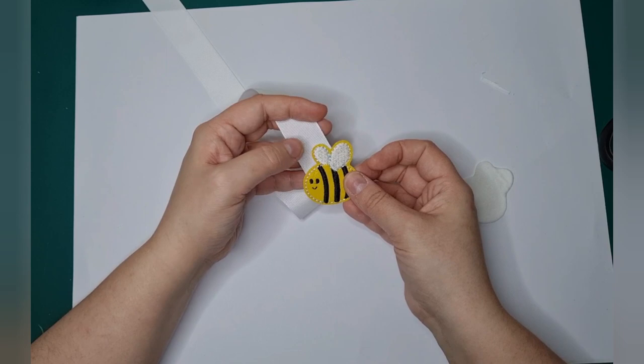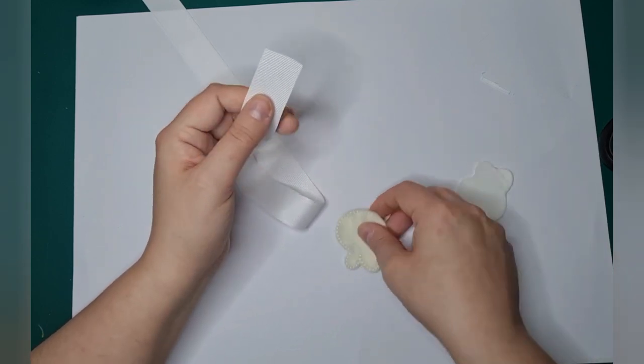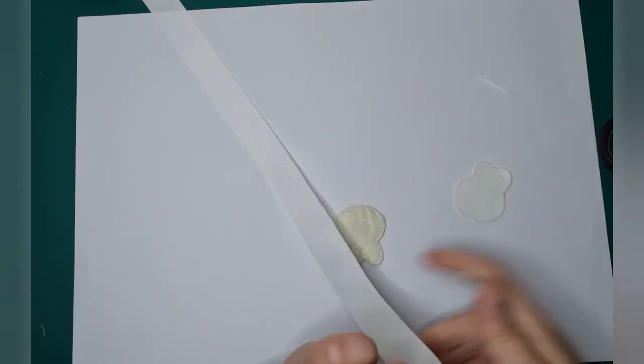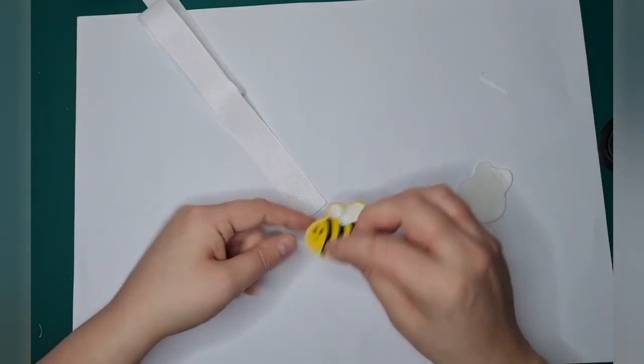Work out where you want the bee placement to be. Whether or not you want him straight or what not. Again make sure you've heat sealed this side. When you're doing it make sure that the ribbon's the right way up as well.